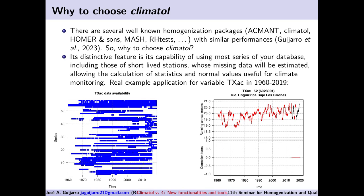There are several well-known homogenization packages like Ackman, Climatol, HOMER and derivatives, MASH, RH, TEST, etc., with similar performances. So what would move a user to choose Climatol? Its distinctive feature is its capability of using most series of your database, including those short-lived stations whose missing data will be estimated, allowing the calculation of statistics and normal values useful for climate monitoring.